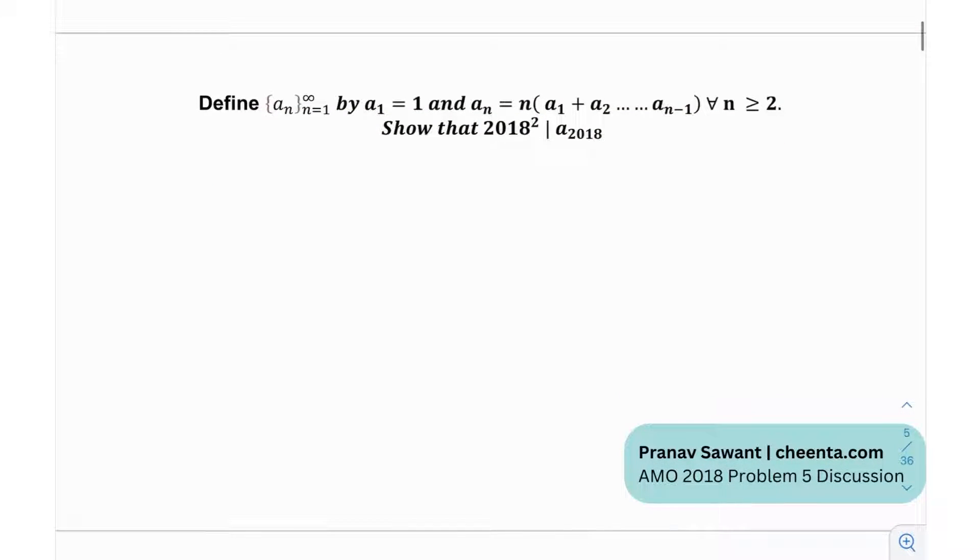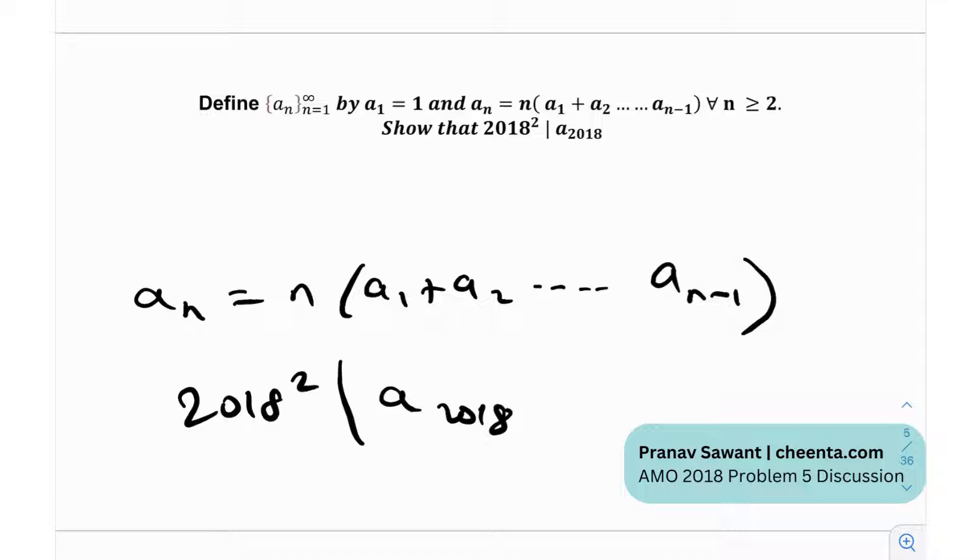We have defined this recursion where {aₙ} is defined from n = 1 to infinity by a₁ = 1, and aₙ = n(a₁ + a₂ + ... + aₙ₋₁). We need to prove that 2018² divides a₂₀₁₈.